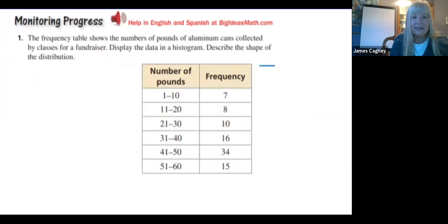Next question. The frequency table shows the number of pounds of aluminum cans collected by classes for a fundraiser. Display the data in histogram and describe the shape of distribution. Here are my intervals. X-axis intervals, frequency goes on the Y-axis. Go ahead and pause the video, make this, and then tell me what shape it is.